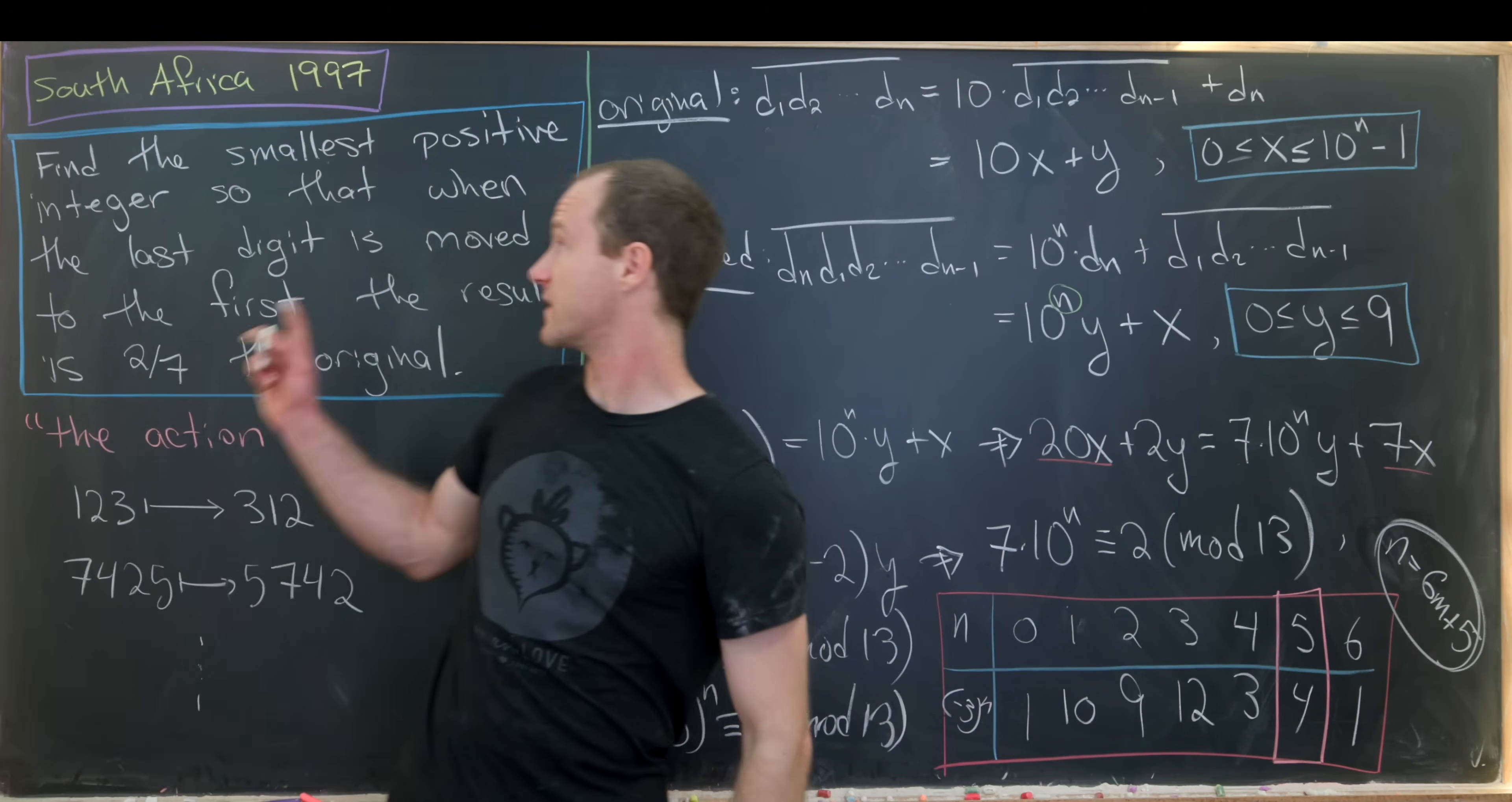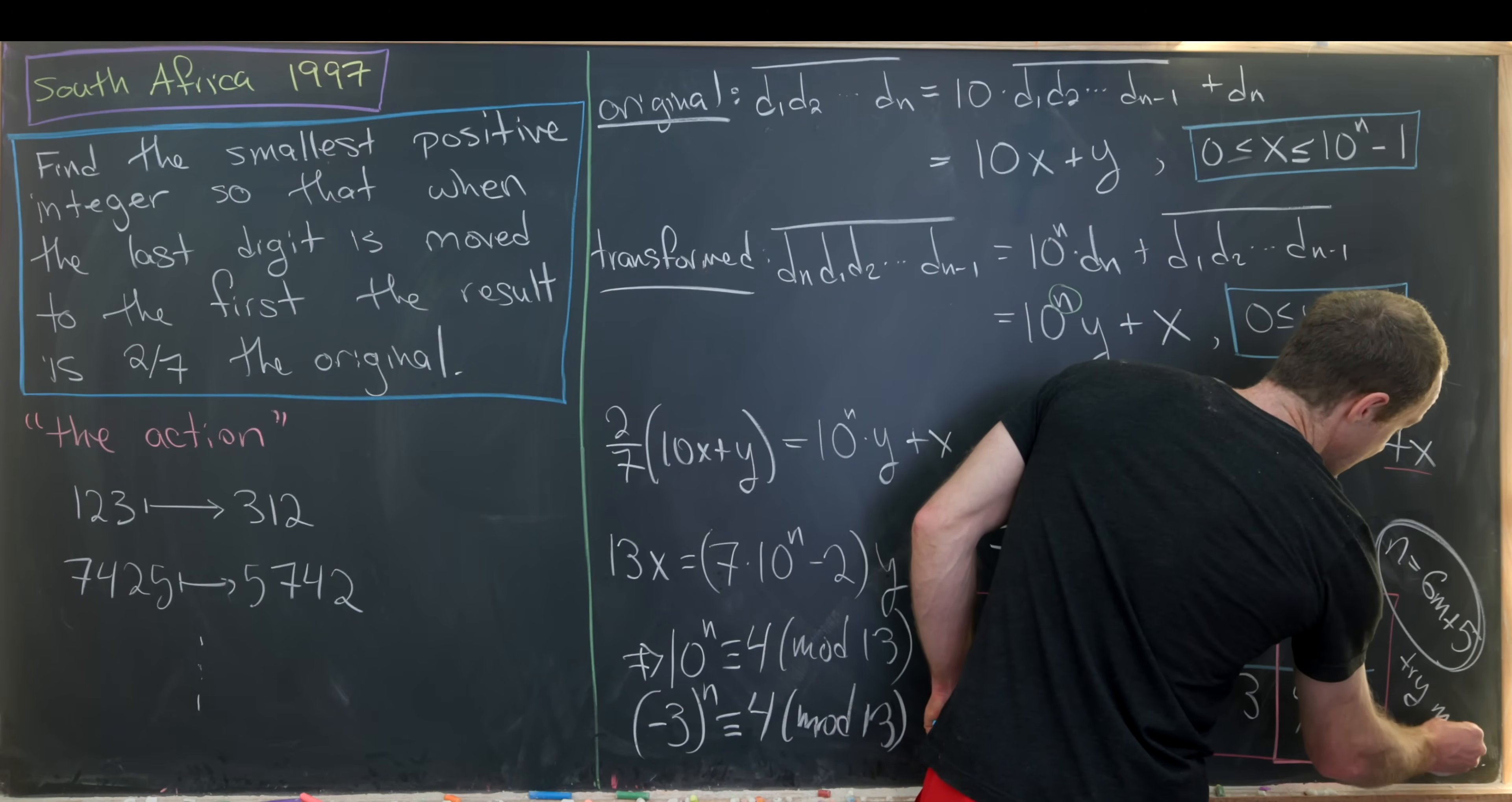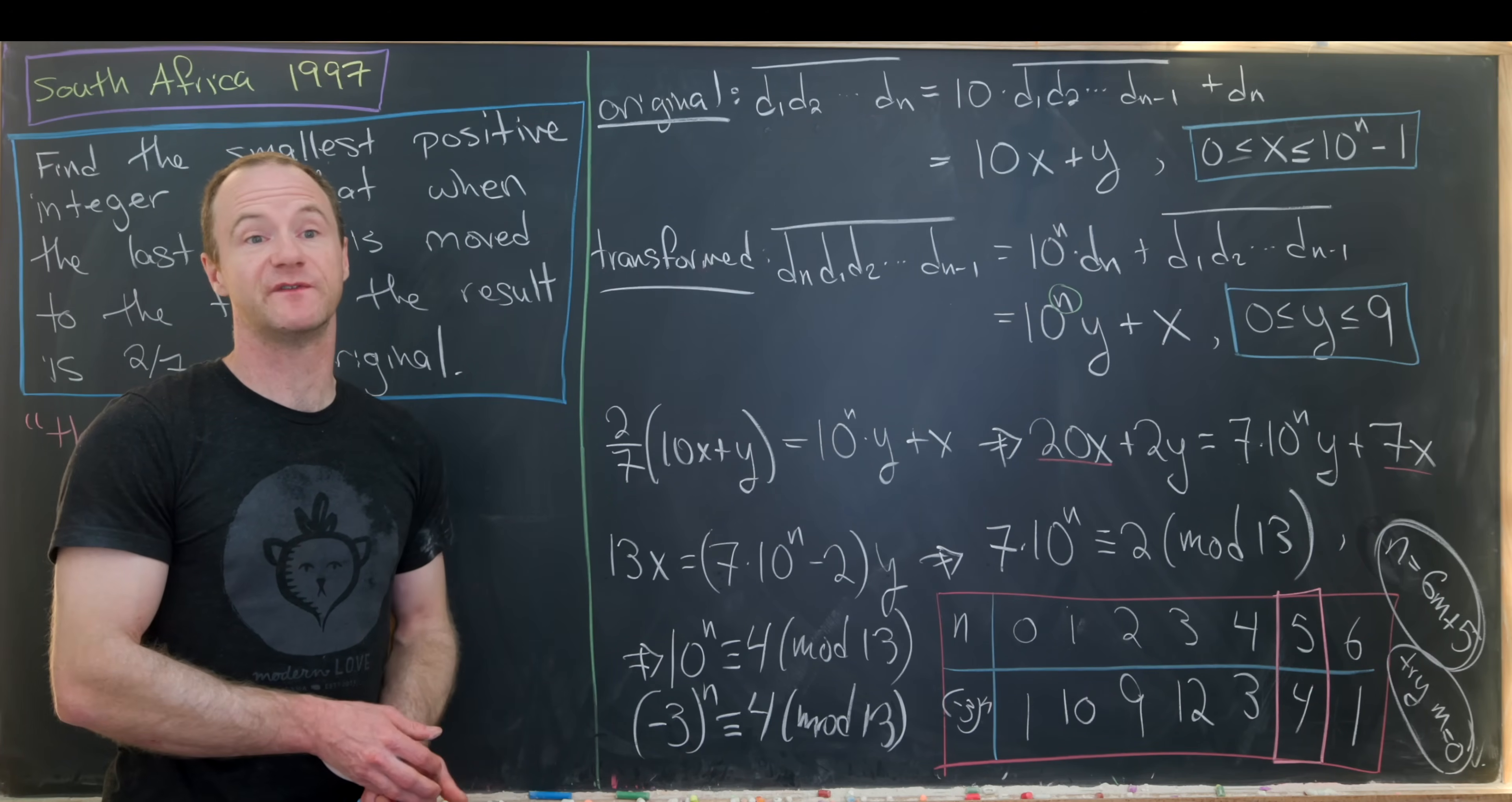Why is it 6m plus 5? Because if we go around every six loops, we get back to 1. So all of those will achieve a 4 when plugged into this equation right here. That being said, since we're looking for the smallest number, it probably stands to reason that we should probably try the m equals 0 case first. In other words, the case when n is equal to 5. And that's exactly what we'll do to finish this off.